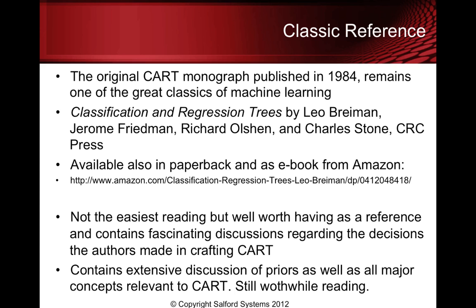The classic reference for what we're talking about is the original CART monograph published in 1984, and it remains one of the great classics of machine learning. It's called Classification and Regression Trees by Breiman, Friedman, Olshen, and Stone. It's available in paperback and as an ebook from Amazon. It is not the easiest reading if you treat it as a whole, but there are parts of the book which are very clear and accessible, even to beginners, especially the discussions regarding the decisions the authors made in CART in the first place. They also have some very interesting comments on their whole approach to analyzing data — very worthwhile.